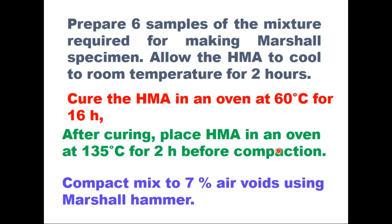To conduct the TSR test, prepare six samples of the mixture required for making Marshall specimens. Allow the HMA to cool to room temperature for two hours. Cure this mix in an oven at 60 degrees centigrade for 16 hours. After this curing, place the HMA in an oven at 135 degrees centigrade for two hours before compaction.